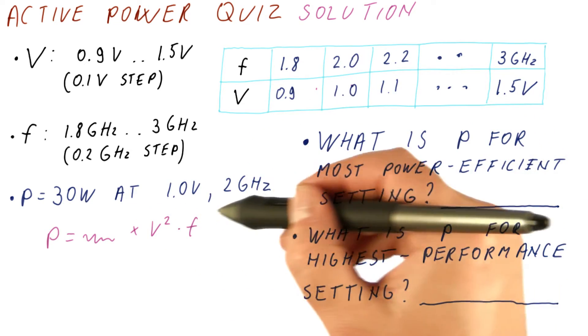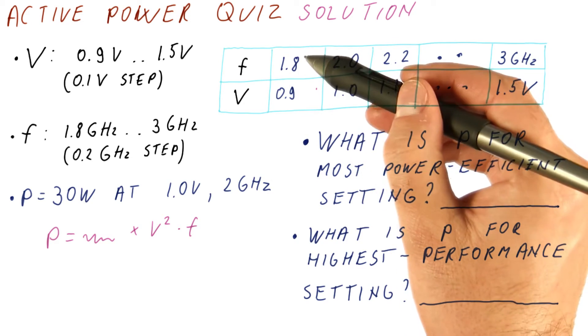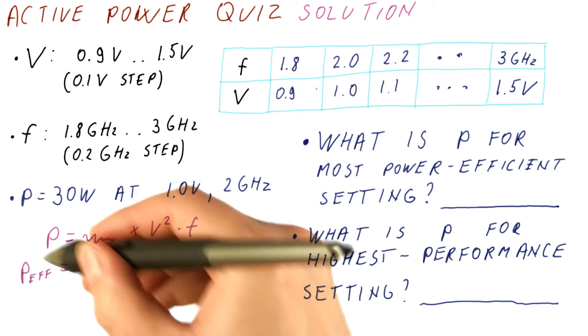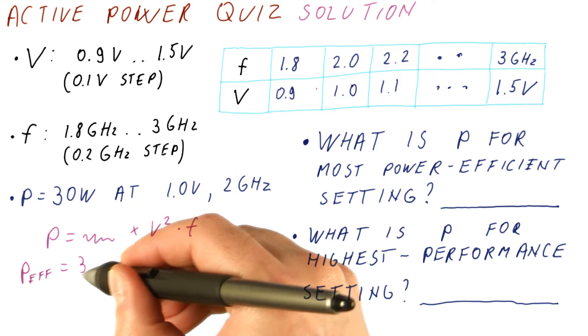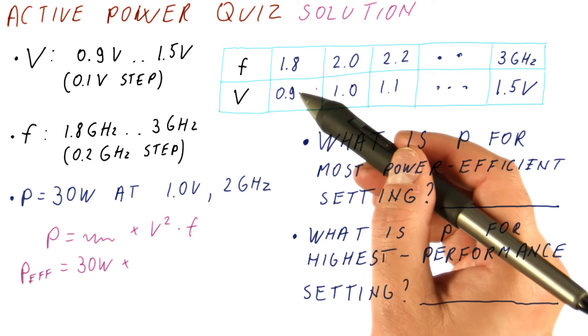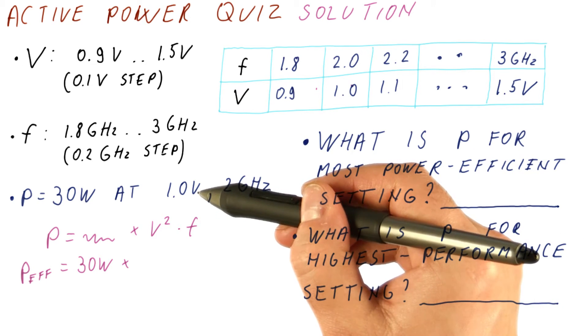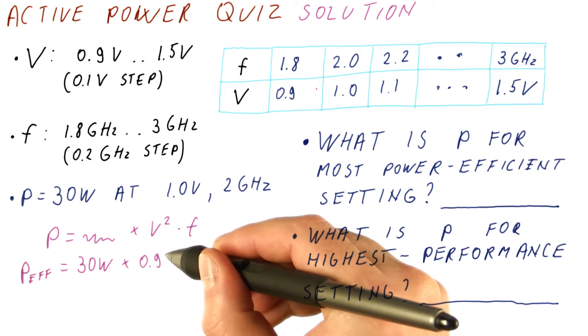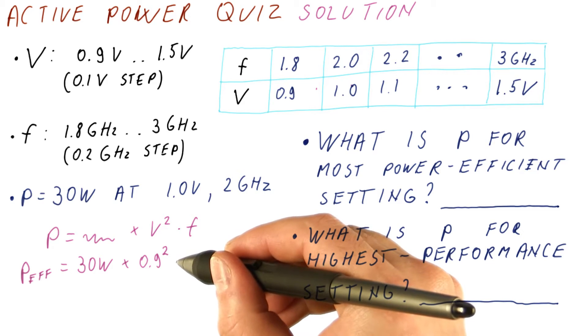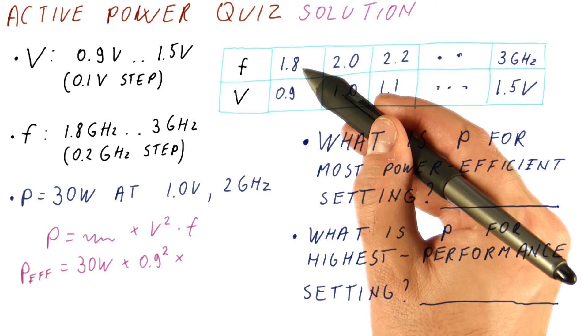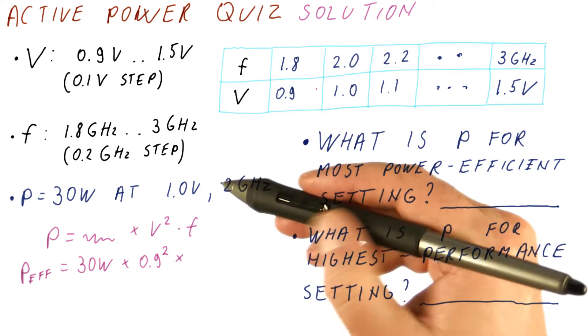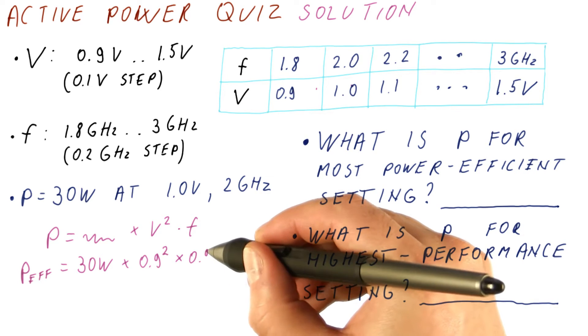Relative to this setting, the power for the most efficient setting is going to be equal to, so this stands for efficient power, it's going to be 30 watts times, the voltage is now 0.9 of what it was. So it's 0.9 squared times the frequency now is 1.8 over 2.